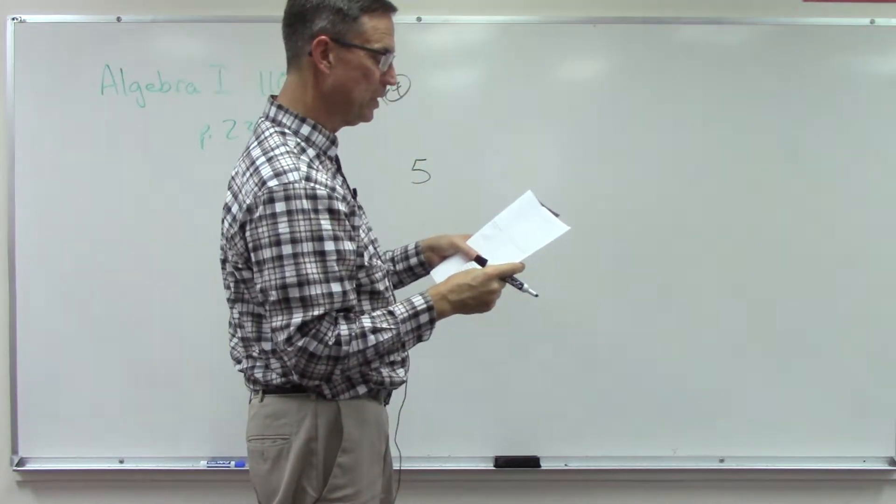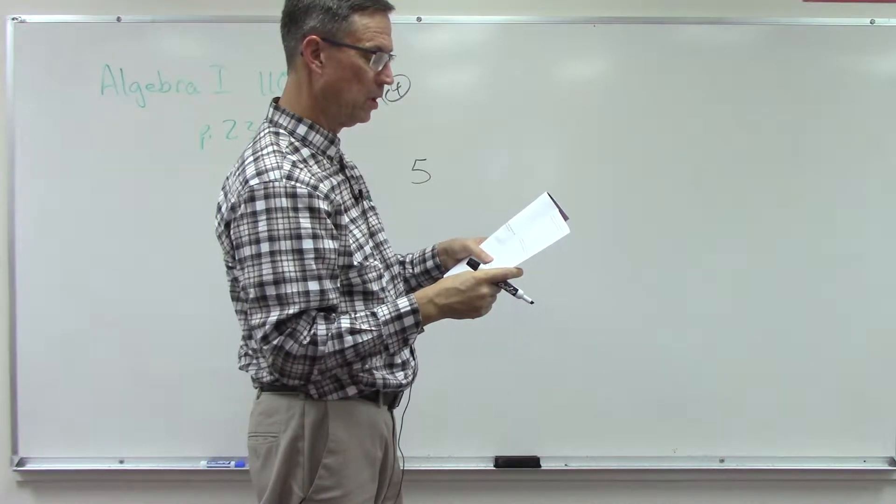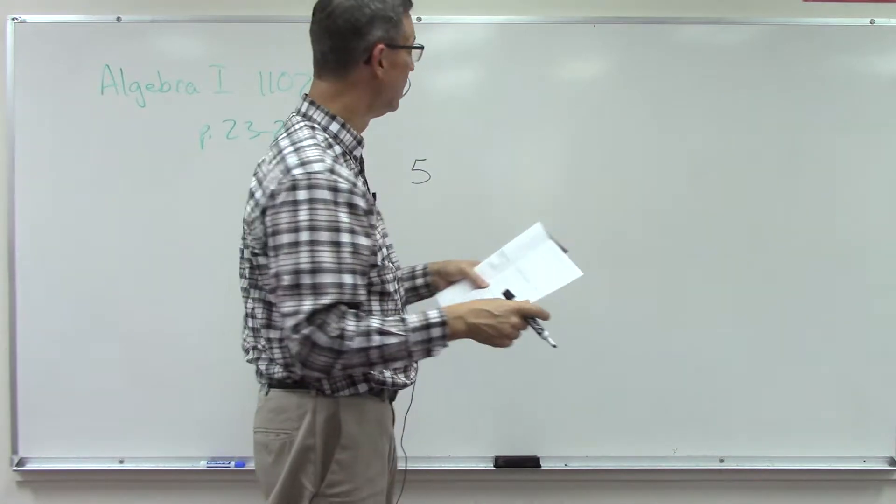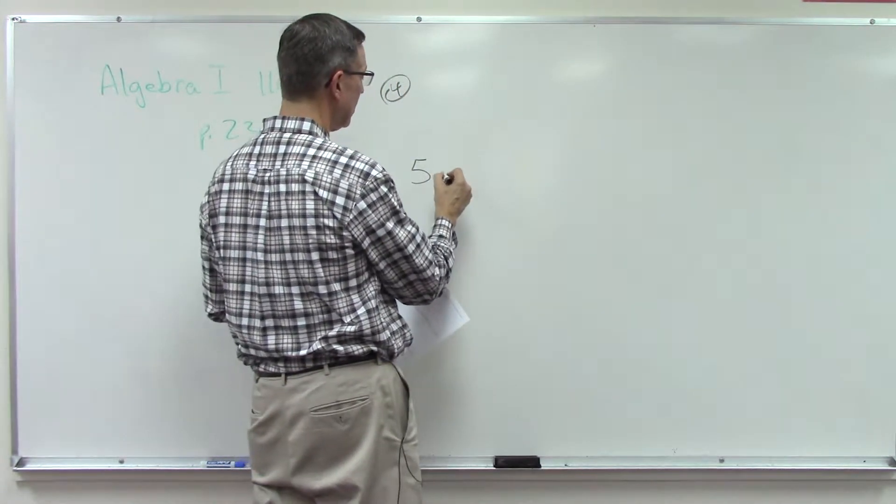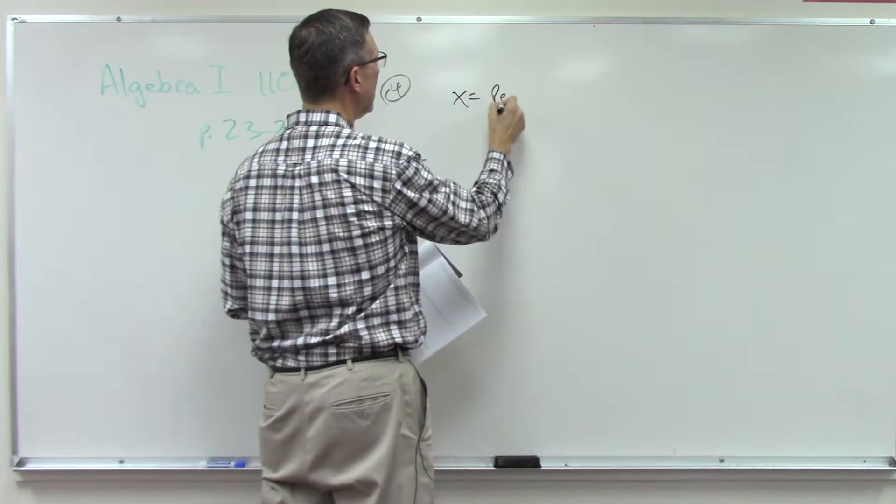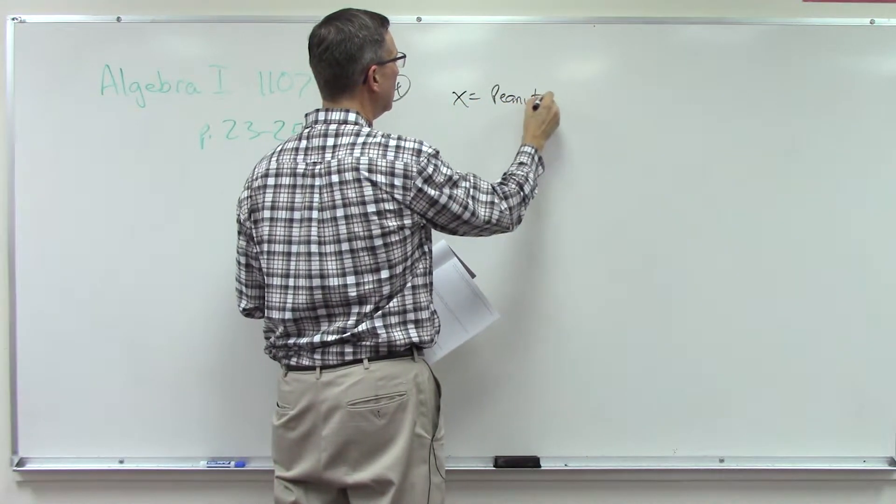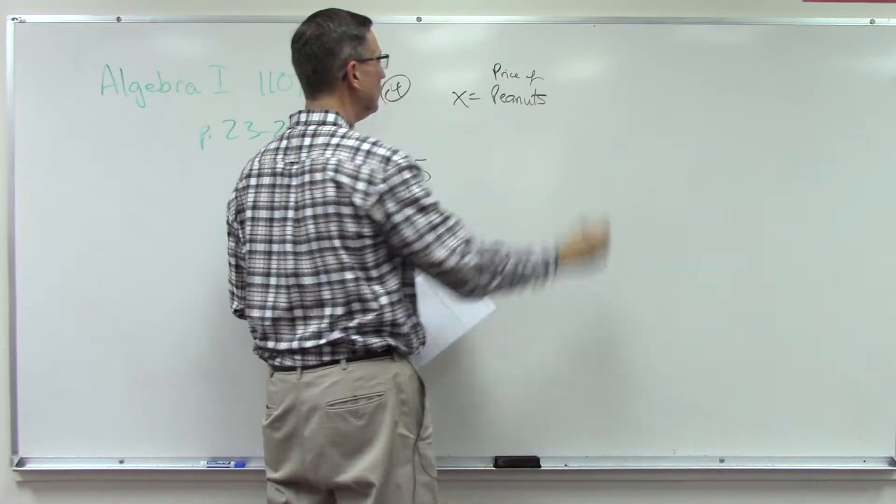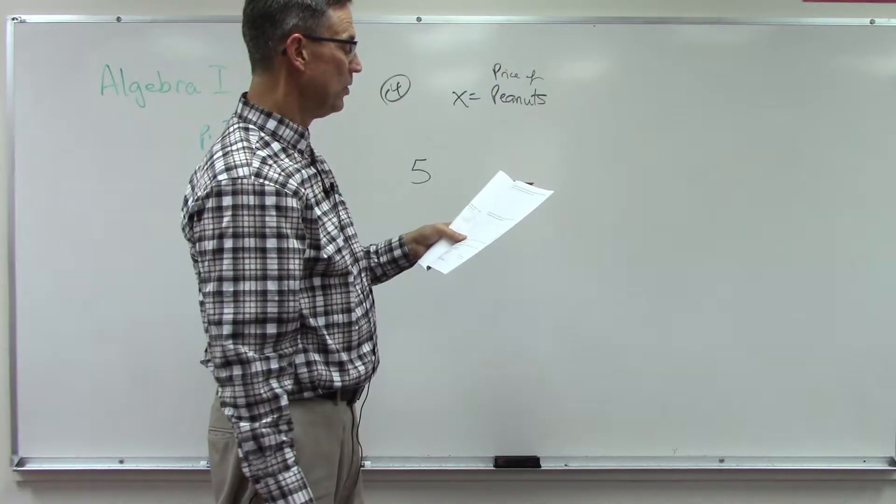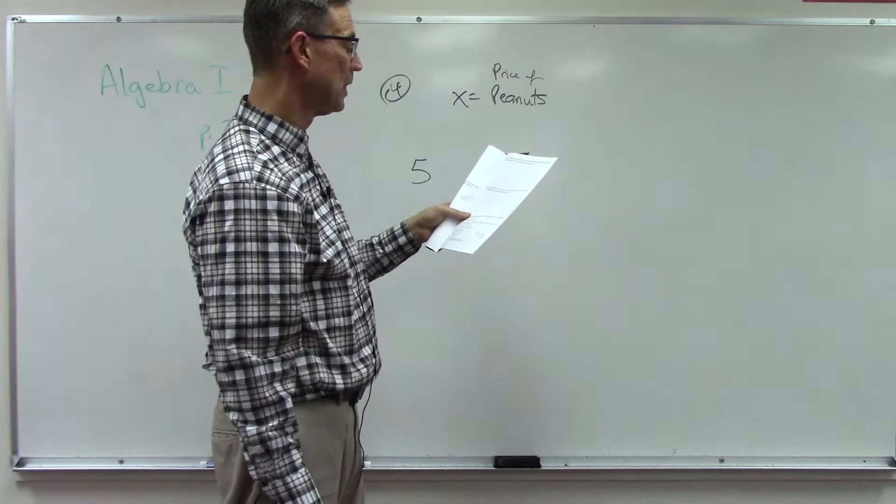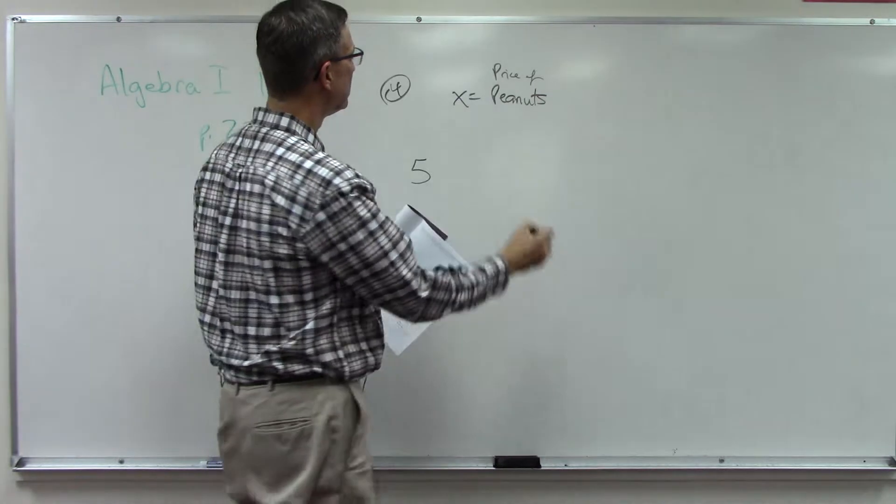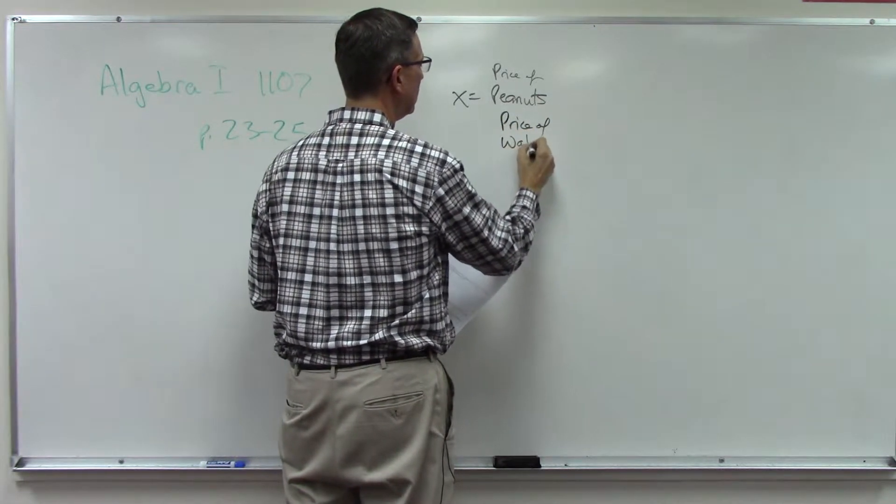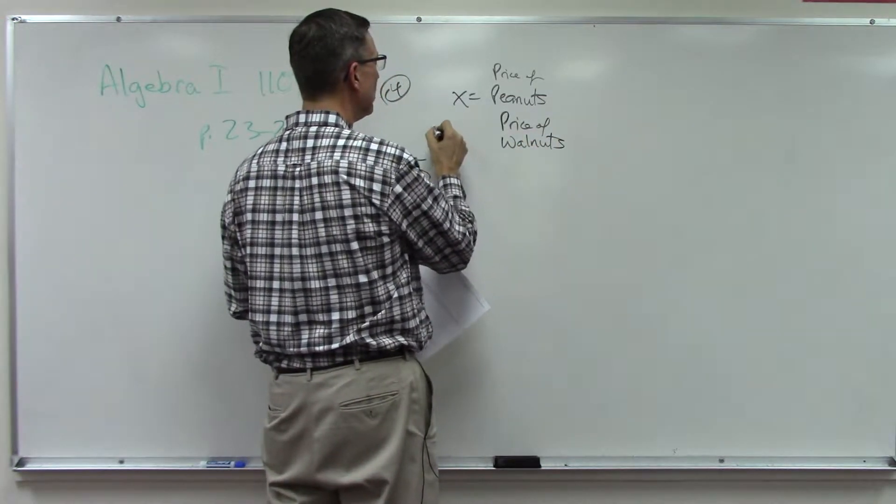Which one did she pay the least for? Walnuts are 20 cents a kilogram more than the peanuts, so the peanuts are cheaper. So we have five kilograms of the, we'll let x equal the price of the peanuts. Then the walnuts, price of the walnuts, what do you think we're going to do with that price?